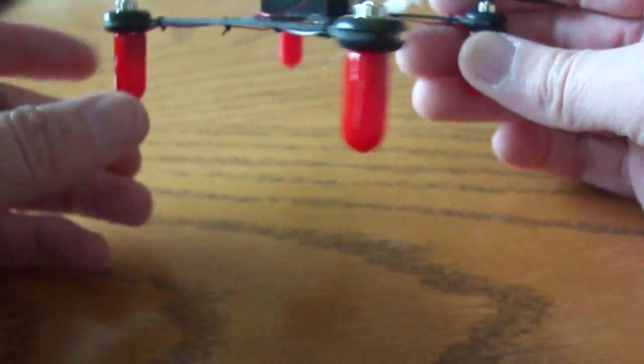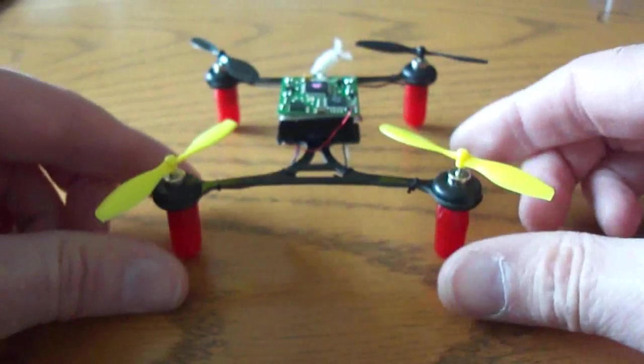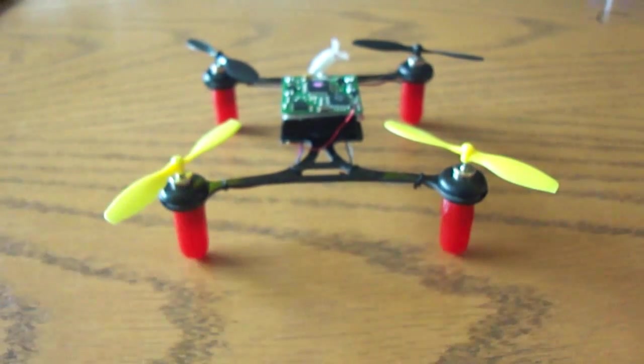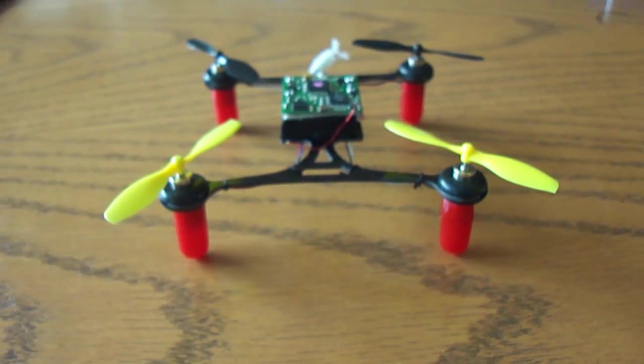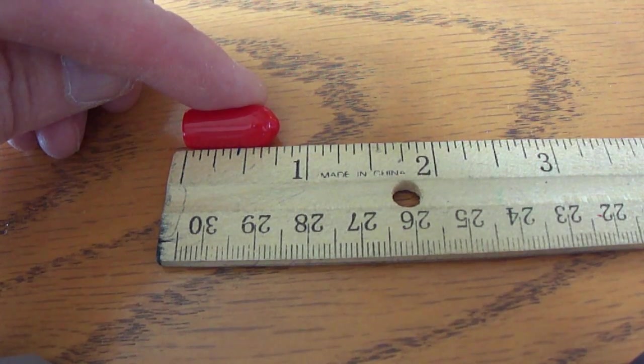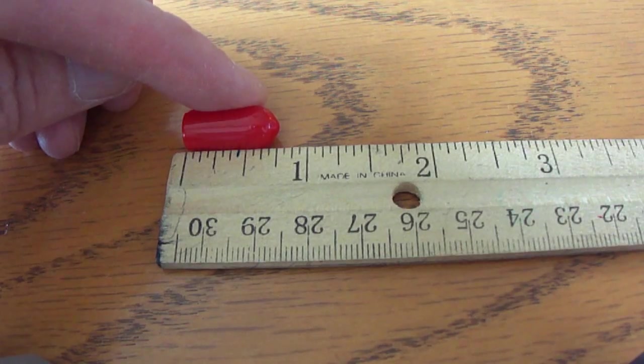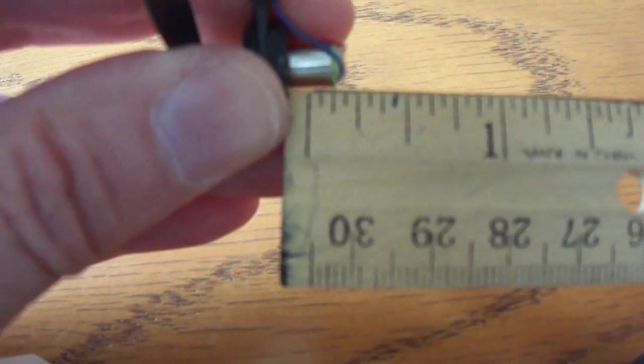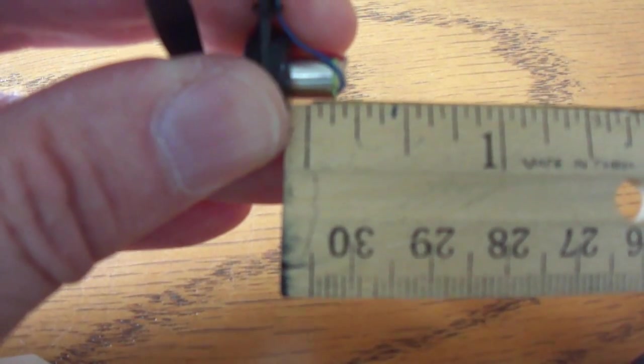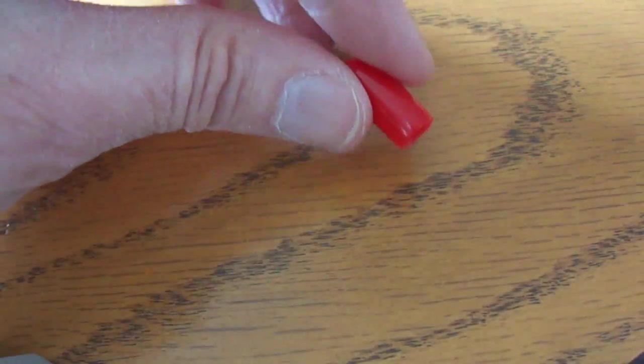It looks good, but I think I'm going to shorten the legs a bit. They don't need to be quite that long and I'll shave just a little weight off. Okay, so these things are about three quarter inch long and I have about five sixteenths sticking out here, so I will trim off about a quarter inch off of these.